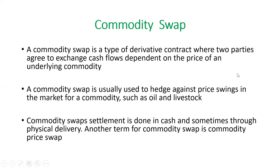The first one is the commodity swap. Basically there are two parties in which this swap agreement is done and the underlying is a commodity — such as oil or livestock. They do this swapping to hedge against an increase in price. Commodity swap settlement is done either in cash or physical delivery.